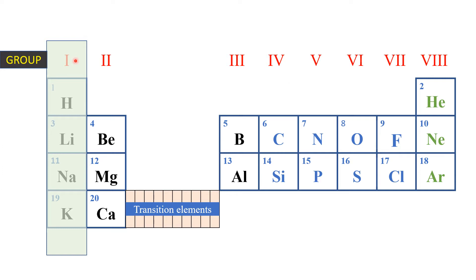For example, this is group 1. It will include hydrogen, lithium, sodium, and potassium. If you look at group 5, we shall have nitrogen and phosphorus. So basically groups will be the vertical columns that we shall be having.